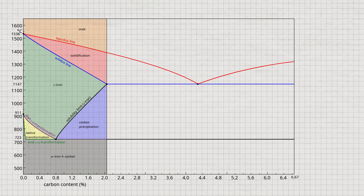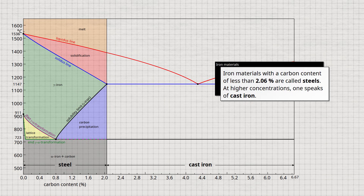So note, iron materials with a carbon content of less than 2.06% are called steels. At higher concentrations, one speaks of cast iron. The relevant range for steels in the iron-carbon phase diagram up to 2.06% carbon is also called the steel part.